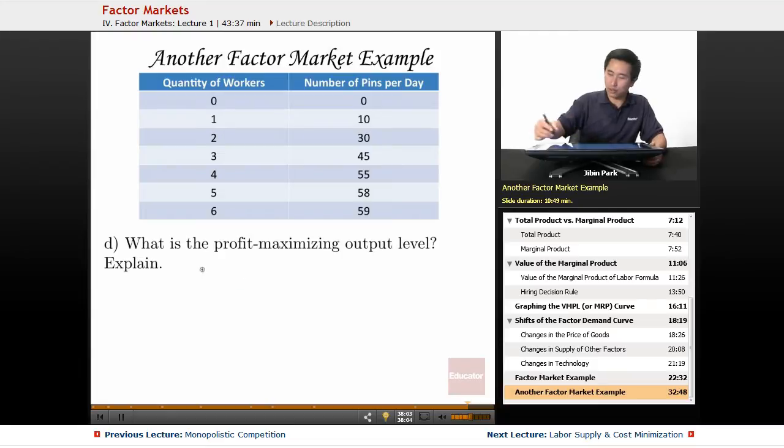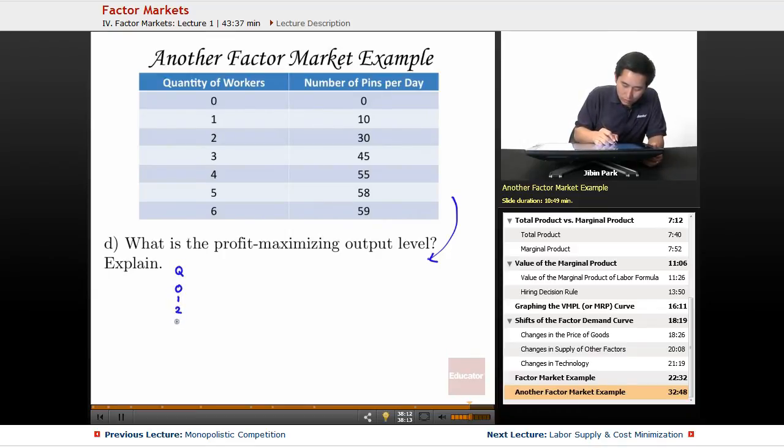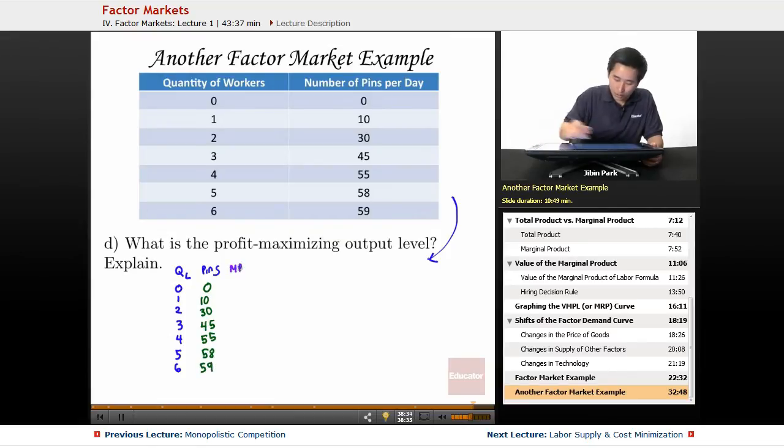Part D: What is the profit-maximizing output level? Let's redraw this graph where there's more space. You have the quantity of workers—zero, one, two, three, four, five, and six—and the number of pins: 0, 10, 30, 45, 55, 58, and 59. You have the MPL: 10, 20, 15, 10, 3, and 1. And the price is $20.